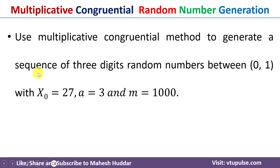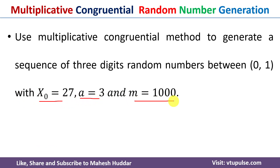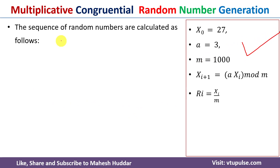We will now solve a simple example. Use the multiplicative congruential method to generate a sequence of three-digit random numbers between zero and one, with X₀ = 27, a = 3, and m = 1000. These are the given values. The sequence of random numbers is calculated as follows: X₀ = 27.